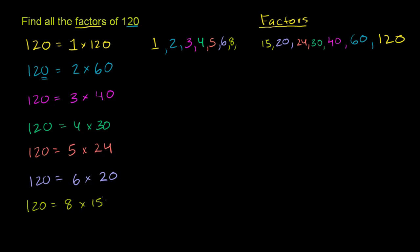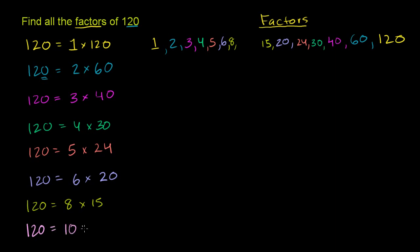Is 120 divisible by 9? To test that, you add up the digits: 1 plus 2 plus 0 equals 3. That satisfies our 3 divisibility rule, but 3 is not divisible by 9, so our number will not be divisible by 9. Let's move on to 10. It ends in 0, so we will be divisible by 10. 120 is equal to 10 times 12 — that's exactly what 120 is. So let's write those factors down: 10 and 12.